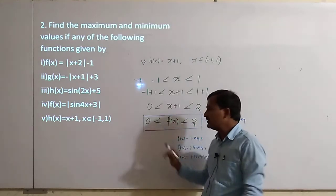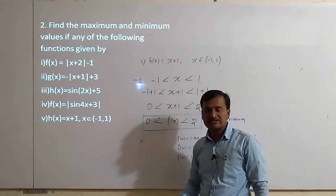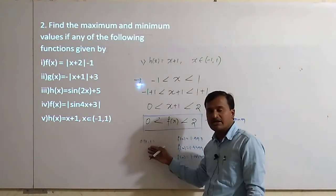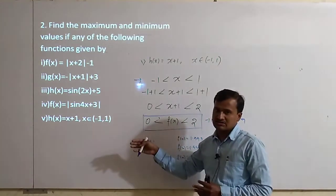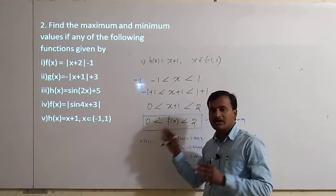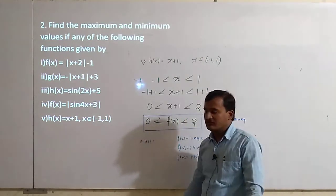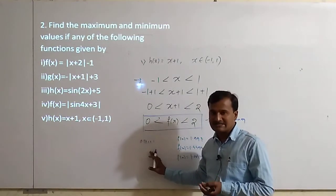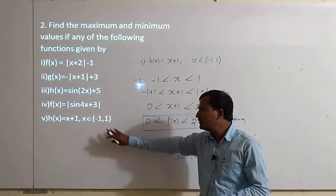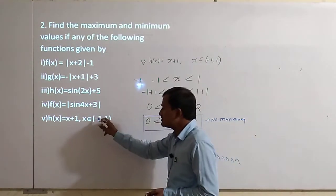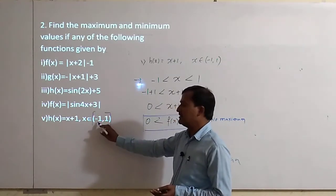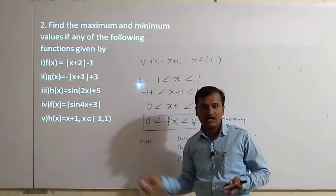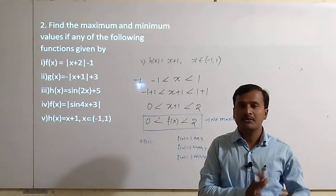Similarly, if you take 0.1 as the minimum, after this point we have 0.11, and so on — we have infinitely many points between 0 and 2. Here also we are not getting any finite value, so this function is also not having any minimum due to the open interval. If it were a closed interval, then the minimum and maximum would be defined, but here due to the open interval we are not having any finite minimum or finite maximum.